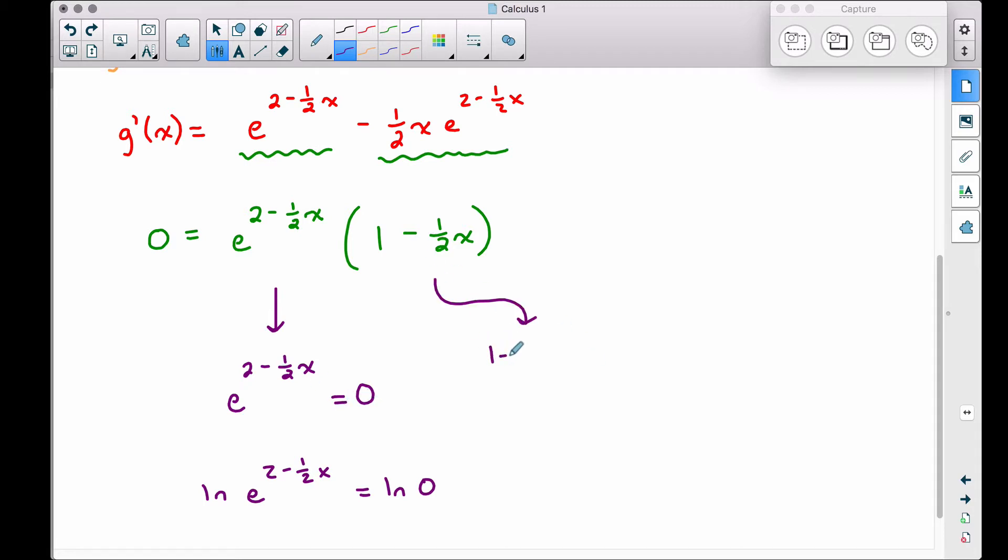Let's take this other factor, one minus one half x and let's set it equal to zero as well. So therefore, we have negative one half x is equal to negative one. I just subtracted one from both sides. And let's multiply both sides by negative two, that's going to get rid of this negative one half. So negative two times a negative one half is a positive one. So therefore, we have x equals a positive two.